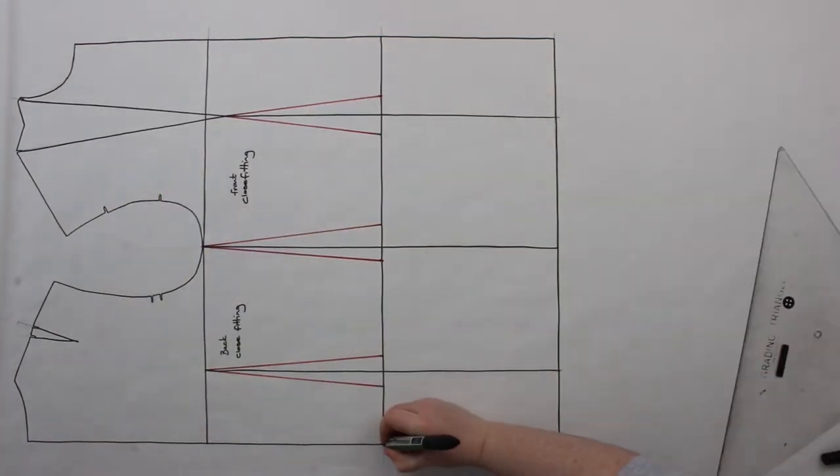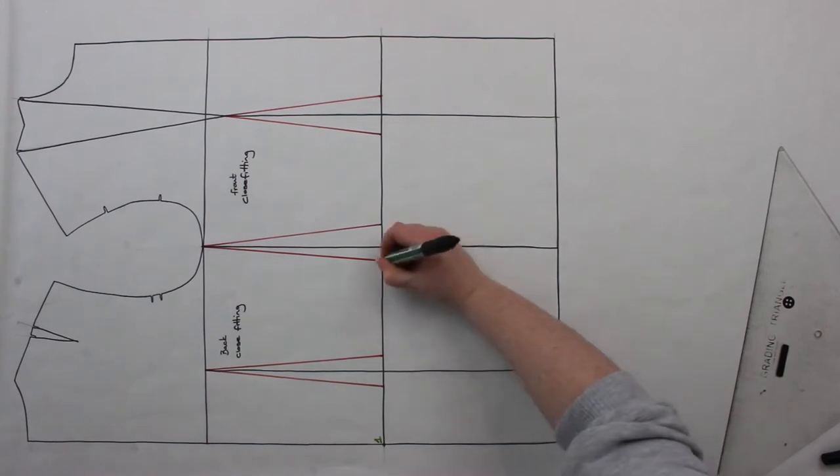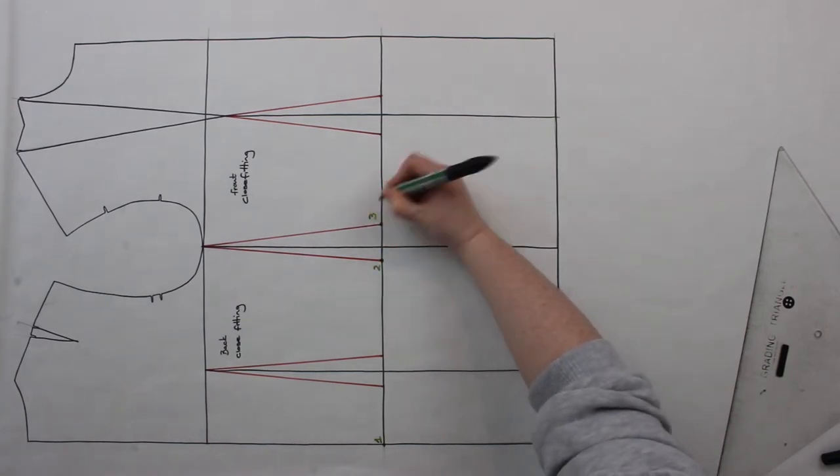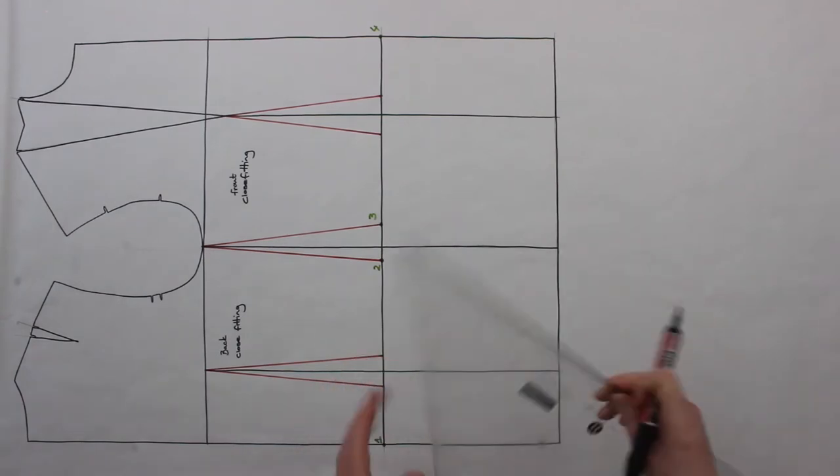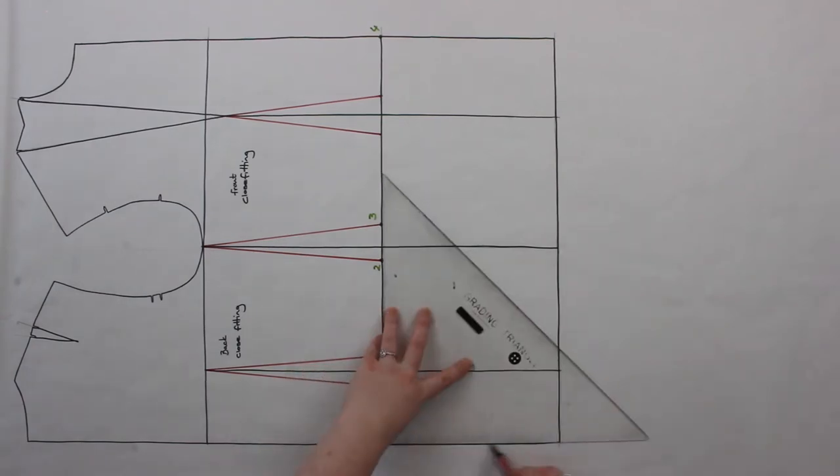Go ahead and mark in points 1, 2, 3 and 4 as I've done in the video. From points 1 and 4, you're going to want to square down using a ruler.